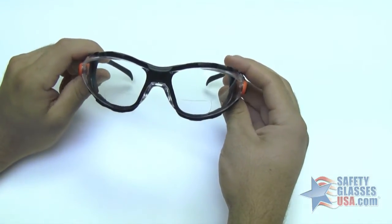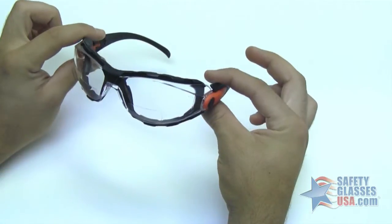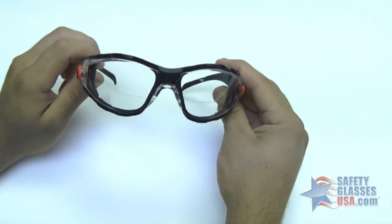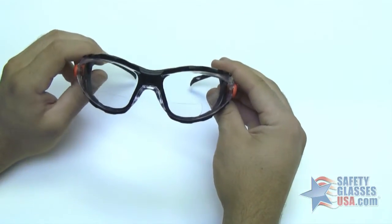The Elvex GoSpecs are available in diopters 1.5, 2.0, and 2.5, and in a gray anti-fog lens. This model features bifocals built into the lens.